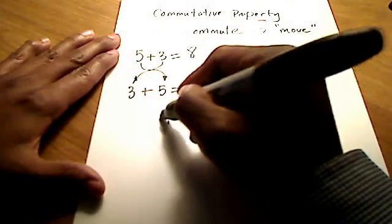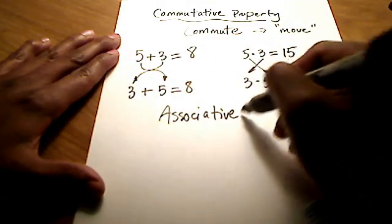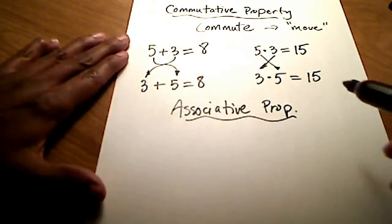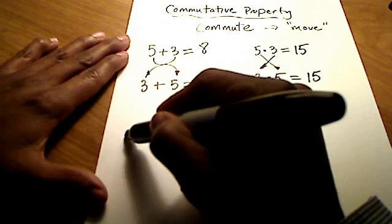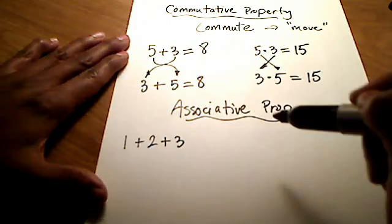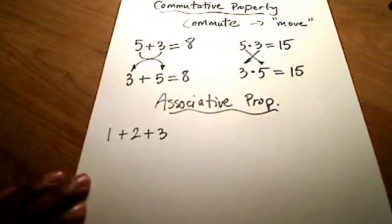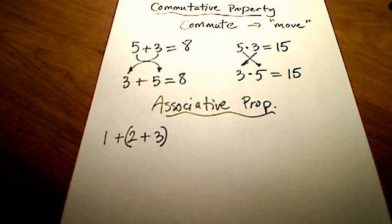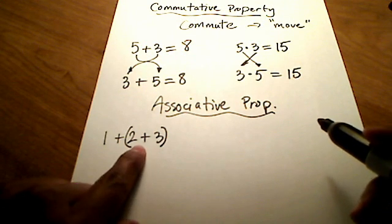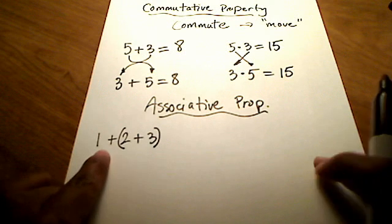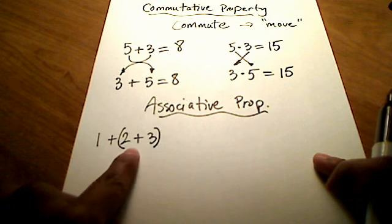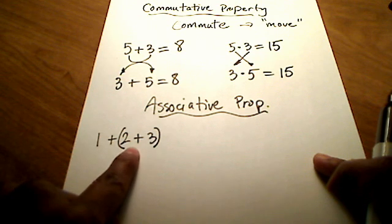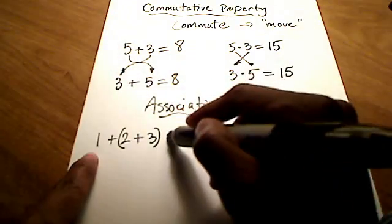The second property is called the associative property, and the associative property often gets confused with the commutative property, and I'll show you why. The associative property works like this. Let's say I had three things, like one plus two plus three, and I am going to put a set of parentheses around the two and the three, which means I want you to associate, I want you to buddy up, I want these two to be friends here before they tackle that one. So I'm forcing you to add these two numbers first, which is five, and obviously plus one more gives you six.